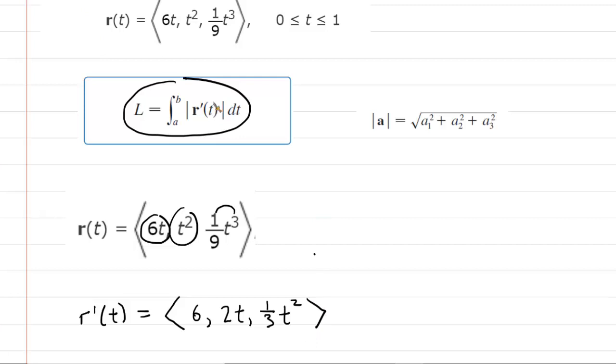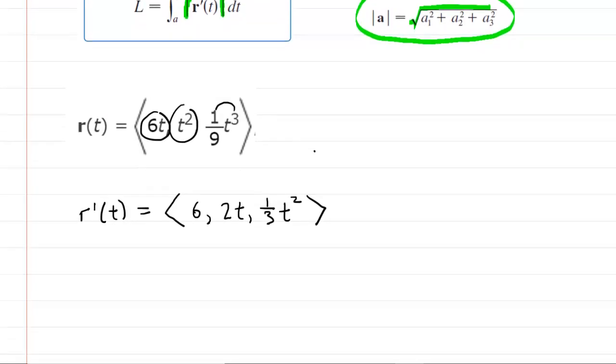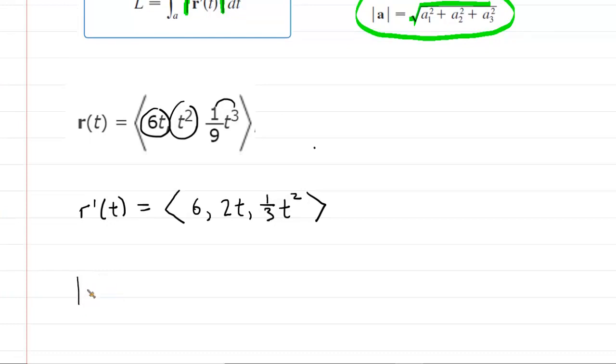And if we look back at the equation for the arc length, after computing the derivative, what we next need to do is figure out the magnitude. And the symbols they use for the magnitude are these vertical lines. And as a reminder, to find the magnitude of a vector, we basically apply kind of a three-dimensional Pythagorean theorem. In essence, what we're going to do is take the square root of the sum of the squares of each component. So in this case, the magnitude of our r prime of t is going to equal a big square root, and then we're going to square each component.